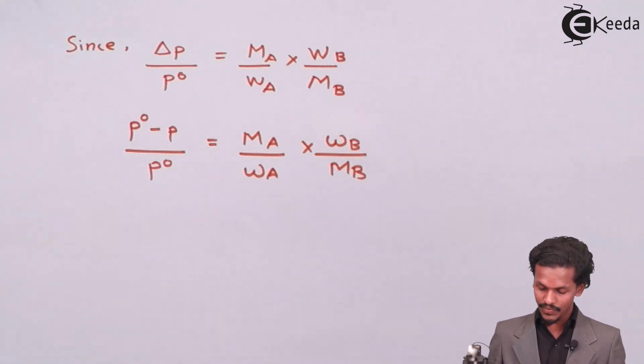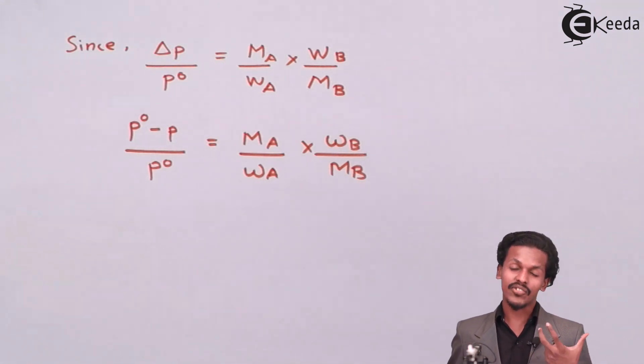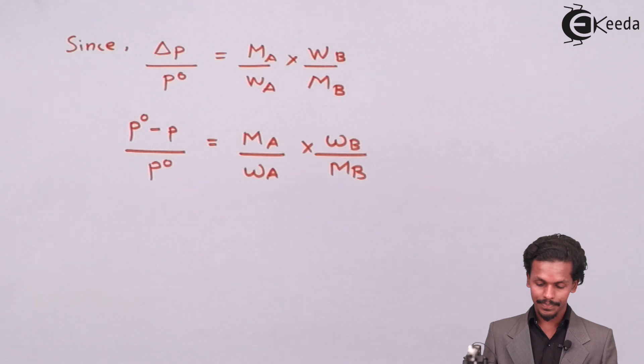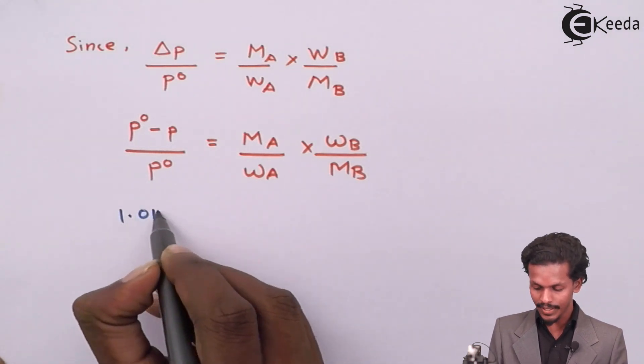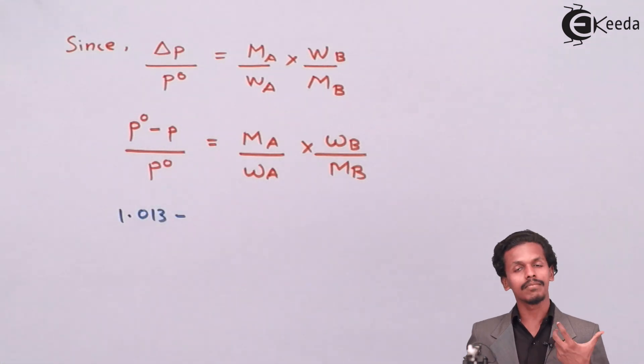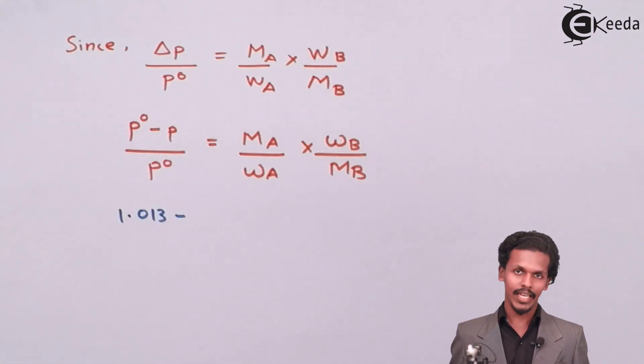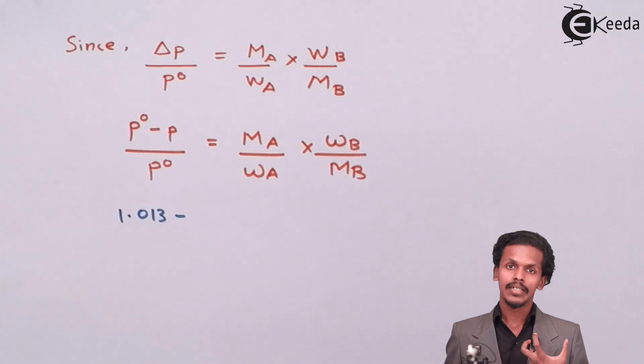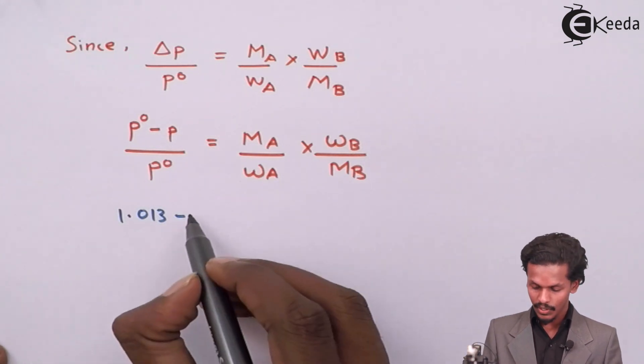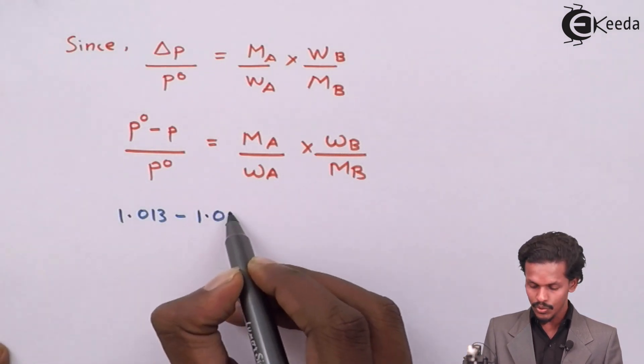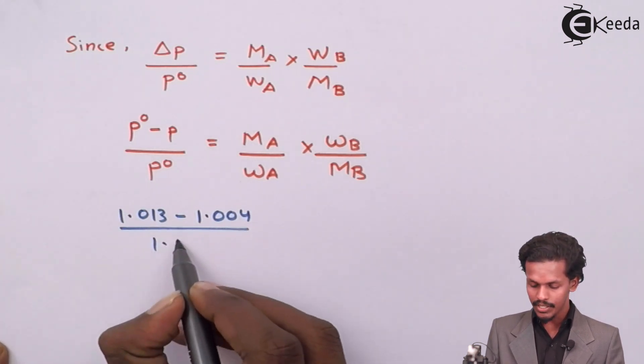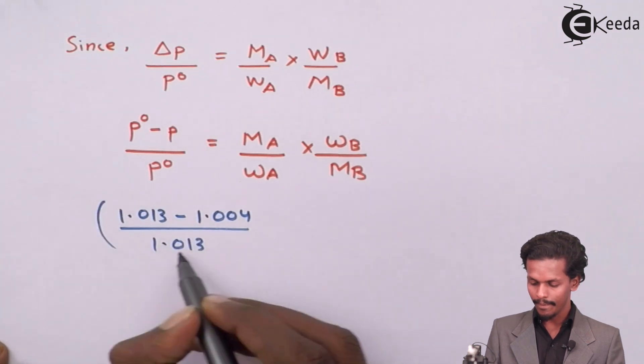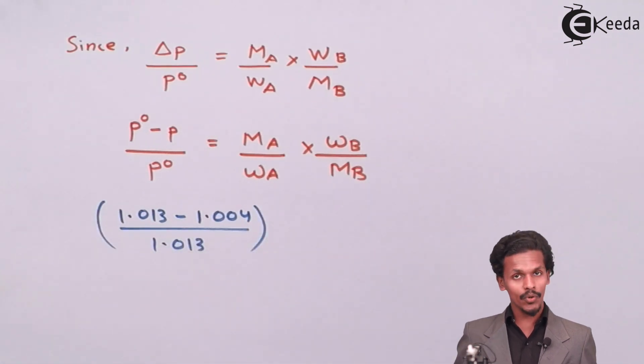So the P0 value which we have extracted from the question was 1.013 minus the P value or the vapor pressure of the solution that we have extracted from the given question was 1.004 bar, the whole divided by 1.013. So this is the relative lowering of vapor pressure.